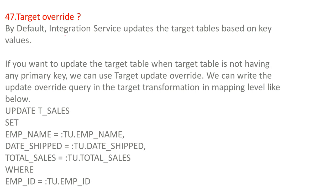Target override: by default, the integration service updates the target tables based on key values. If you want to update the target table when the target table does not have any primary key, we can use target update override. We can write the update override query in the target transformation at the mapping level, for example: UPDATE T_target_sales SET employee_name = :DO.employee_name, date_ship = :DO.date_ship, total_sales = :DO.total_sales WHERE employee_id = :DO.employee_id. Like this we give the target override query.